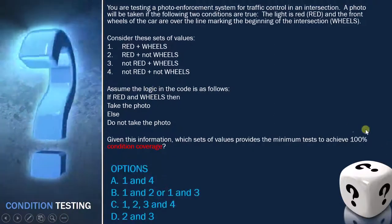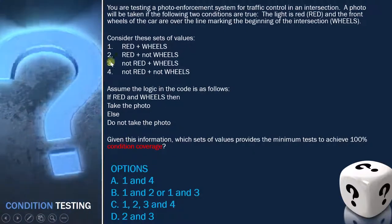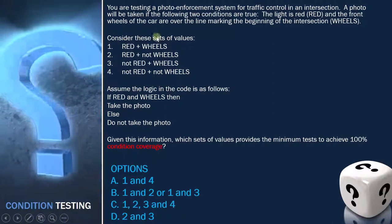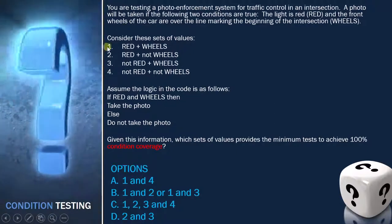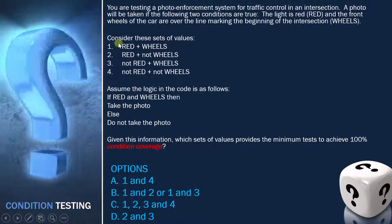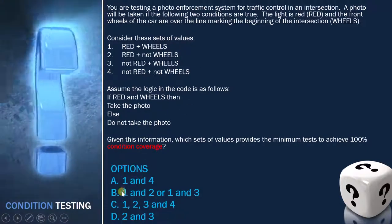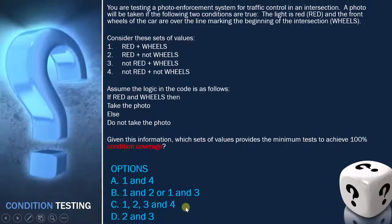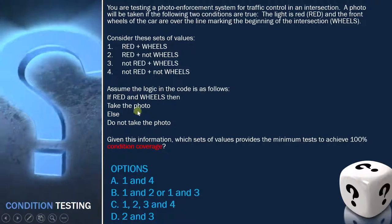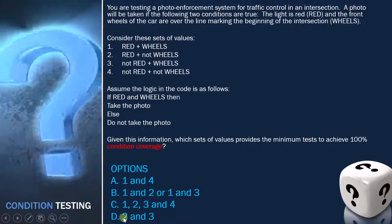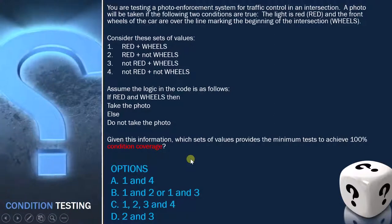The answer options given are: option A — select tests 1 and 4; option B — select 1 and 2, or 1 and 3; option C — execute all four conditions (1, 2, 3, and 4); or option D — execute only 2 and 3. We need to determine which pair achieves 100% condition coverage.